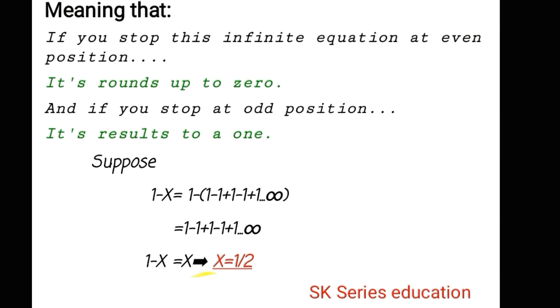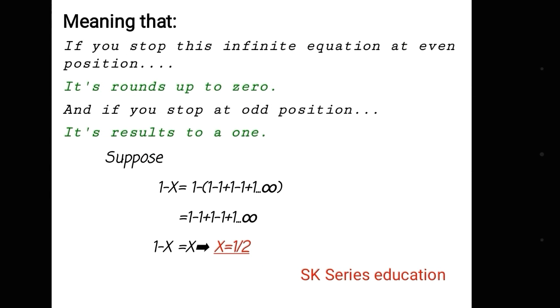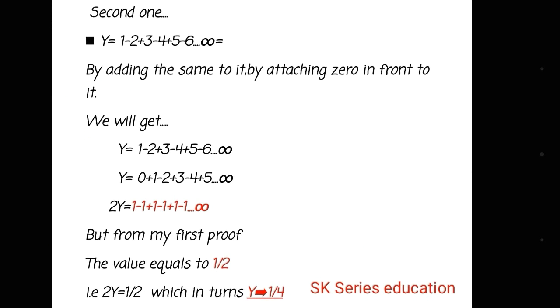And the second thing is the value of 1 - 2 + 3 - 4 + 5..., where the signs are changing alternately. So to solve, I am adding the same to it by attaching 0 in front of it. See here, in the second equation I am adding a 0 in front of it. If I add these two equations I will get Y + Y = 2Y.